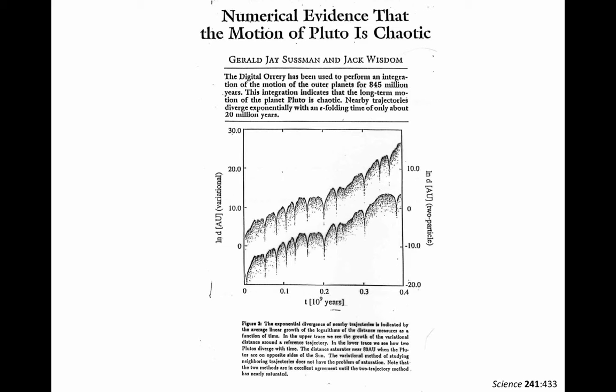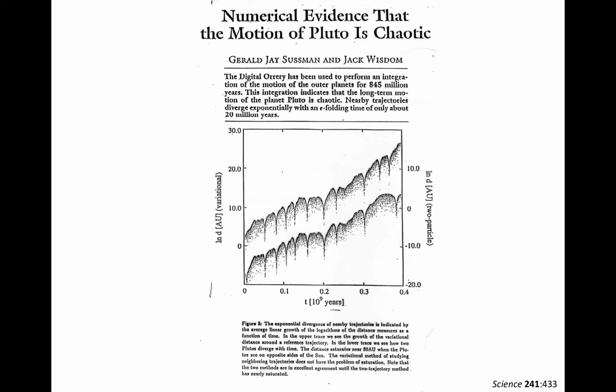Back to fixed points. Recall the definition of a fixed point in a map: it's a point that doesn't move under the influence of the dynamics. The definition is the same in flows — a point that doesn't move under the influence of the dynamics. Thinking about that properly is going to lead us to our first encounter with the notion of a dynamical landscape.